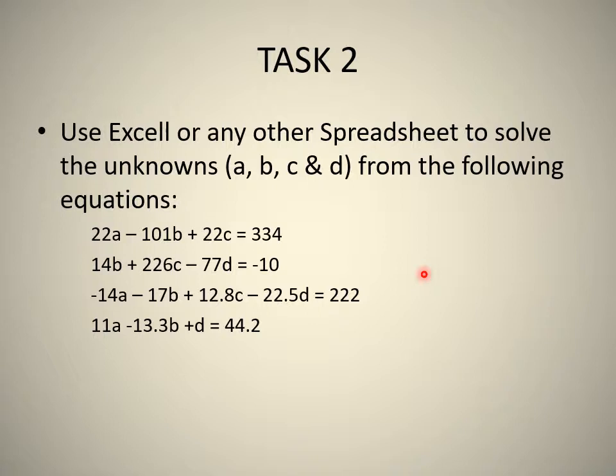Please do that so that you familiarize yourself on how to use a tool such as a spreadsheet to assist you in doing these calculations. That is your first assignment or first task. The second assignment is basically like the example we've used in the fourth part where we have a certain number of equations and a certain number of unknowns. Our unknowns would be a, b, c and d. So our first equation is 22a minus 101b plus 22c equals 334. Second equation you will see it's 14b plus 226c minus 77d equals minus 10. Third equation and then the fourth equation also with our unknowns.